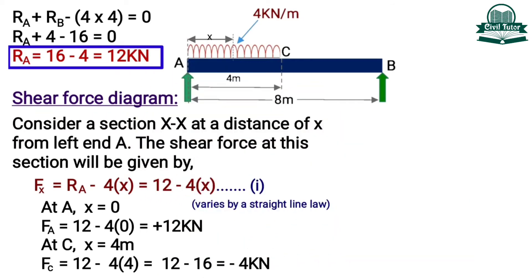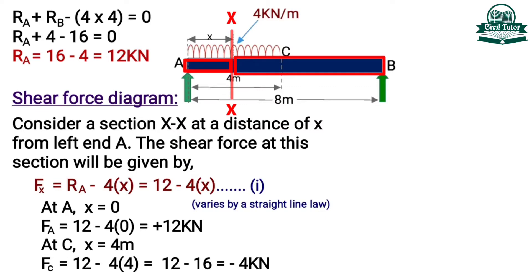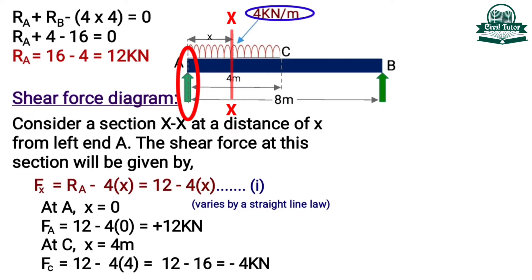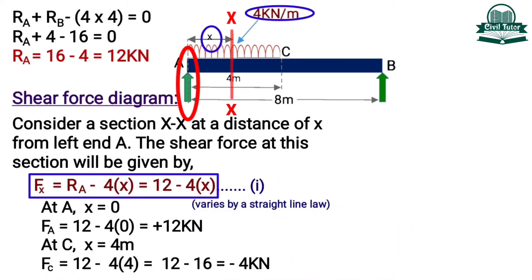Now the second step is to calculate the shear force. Let's consider a section XX at a distance of X from point A. The shear force at this section will be equal to the summation of all the forces either to the right or to the left of this section. Considering the left portion, shear force at section X will be equal to support reaction RA minus load intensity 4 into X, equal to 12 minus 4X. Let's mark this as equation one.